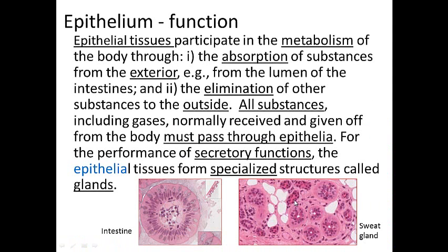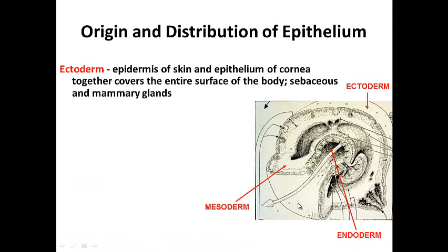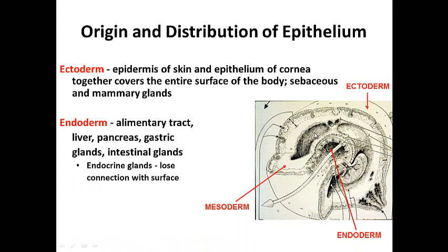Here we see sweat glands and a sweat duct, and here is an intestinal villus with goblet cells and absorptive cells lining the exterior. The origin of epithelium is from all three germ layers. The ectoderm gives rise to the skin, cornea, salivary glands, and mammary glands. The endoderm gives rise to the GI tract, pancreas, liver, lungs, and also endocrine glands.